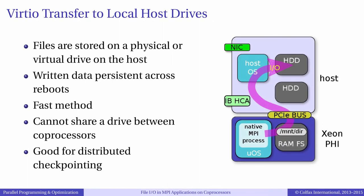The second method is based on virtio functionality. It overcomes the size limitation of the RAM disk by allowing a coprocessor to read and write files that are physically stored on a hard drive on the host. This storage system is similar to the system used in virtual machines, where a file or a partition on the host is virtualized as a hard drive on the virtual machine. Similarly, a file or a partition on the host can be virtualized as a hard drive on Intel Xeon Phi coprocessor, giving up to 2TB of disk space. I/O operations to the virtual disk are cached by the operating system. Virtio may also be useful for scratch data and for access to large read-only datasets.